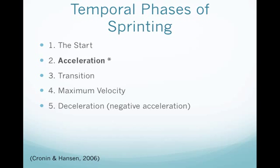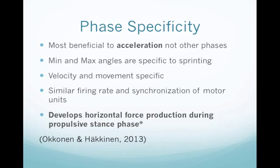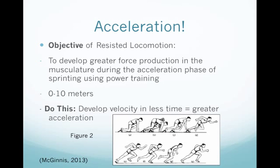I'm going to mainly cover the acceleration temporal phase of sprinting. The specificity of resisted sprinting is that it's most beneficial to the acceleration phase. This is mainly because the minimum and maximum angles are specific to sprinting — the hip angle and knee angle. Resisted sprinting is velocity and movement specific and gives a similar firing rate and synchronization of motor units. The objective is to develop greater force production in the musculature during the acceleration phase using power training, essentially in the first 10 meters of the sprint.